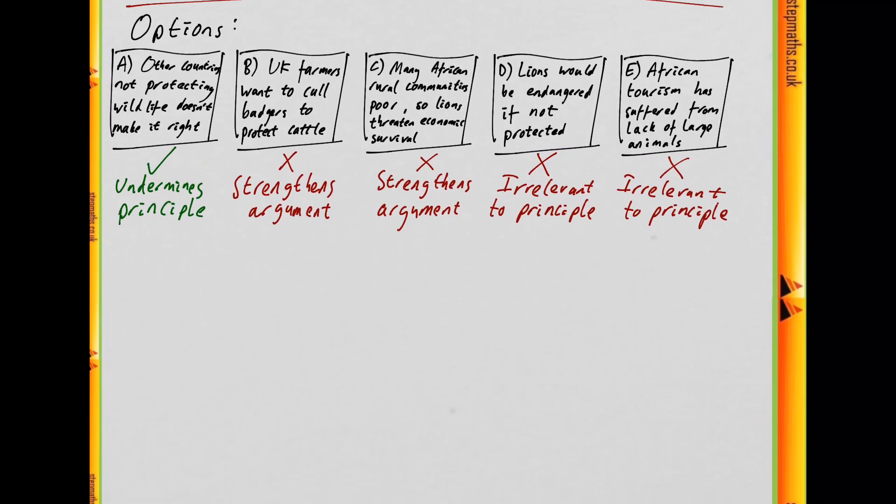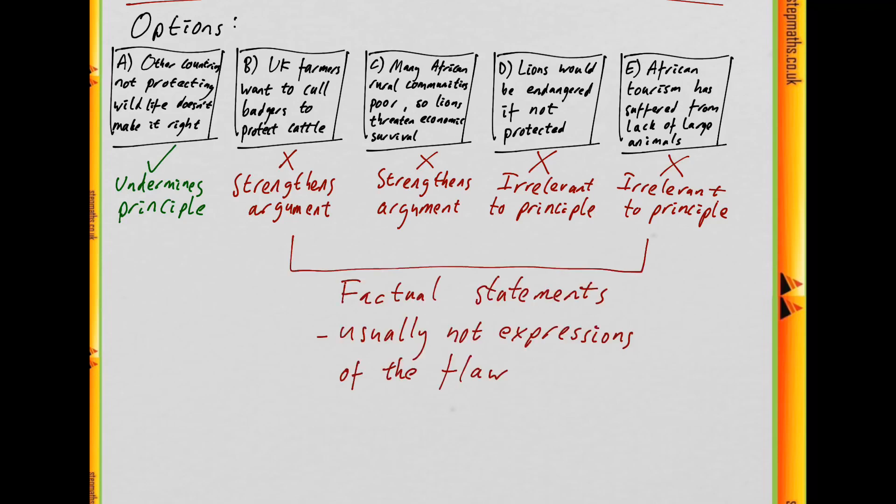Something it's useful to point out here is that B to E are all factual statements. But usually a statement of what's true about the world, like what's happening in the UK or what happens in African tourism, isn't going to express a flaw in an argument. Normally the flaw is going to be some kind of more general principle like A is. So again, we conclude that A is going to be our final answer.